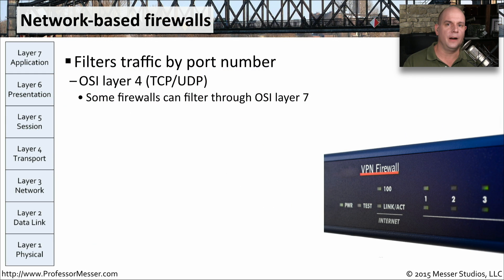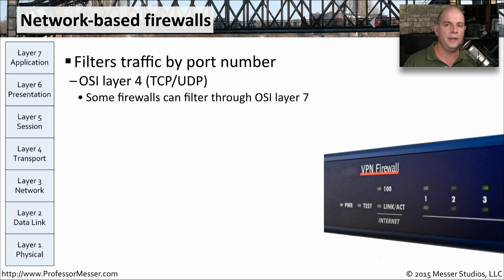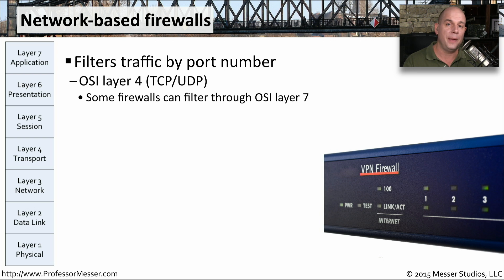We might also have firewalls on our network that are outside of our operating system and connected to our network infrastructure itself. These are network-based firewalls, designed to filter information based on OSI layer 4 — the TCP or UDP port numbers going through your network. Some firewalls are also application aware, meaning they know what type of applications are going across the wire and can allow or disallow access based on the application data itself.